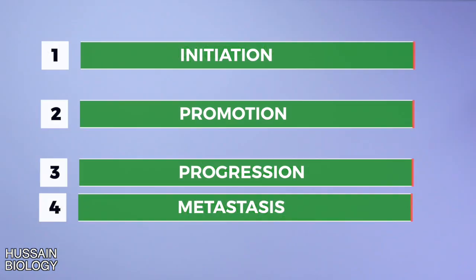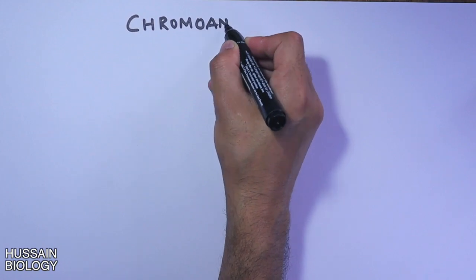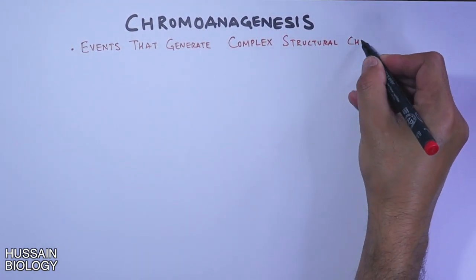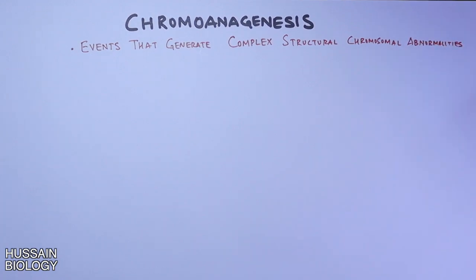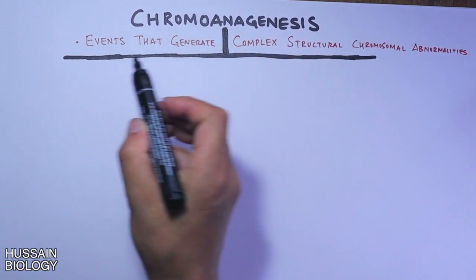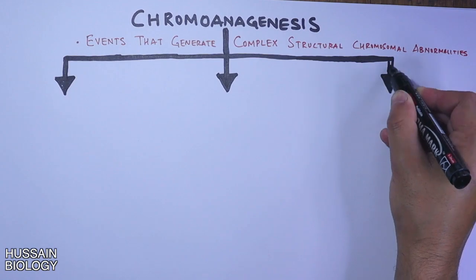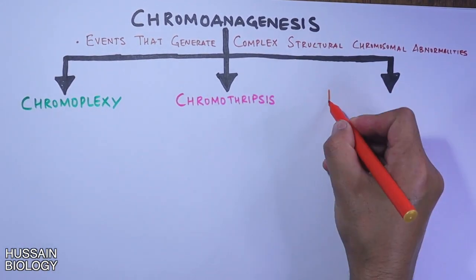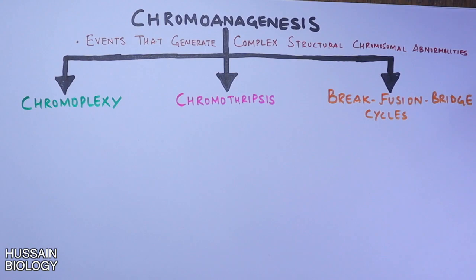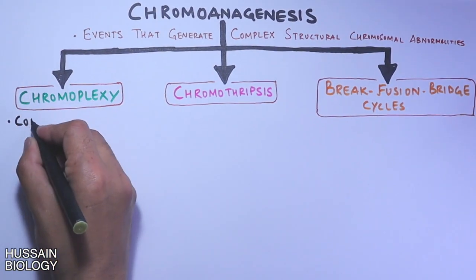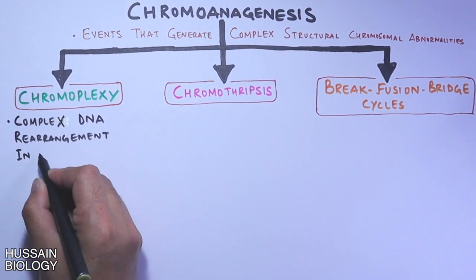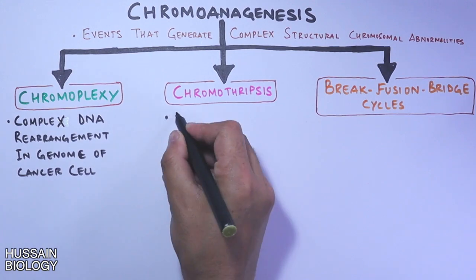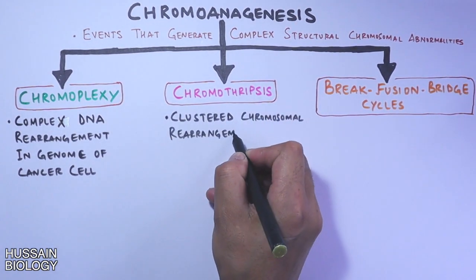There is also the concept of chromoanagenesis, which refers to events that generate complex structural chromosomal abnormalities. Chromoanagenesis occurs through three mechanisms: chromoplexy, chromothripsis, and break-fusion-bridge cycles. Chromoplexy involves complex DNA rearrangement in the genome of the cancer cell, whereas chromothripsis involves localized chromosomal rearrangement in a single event.